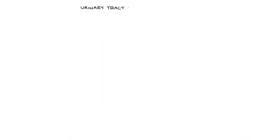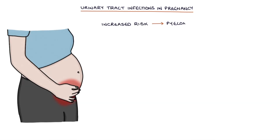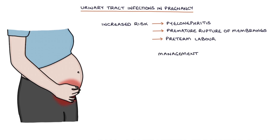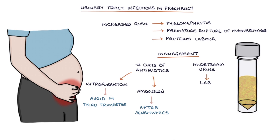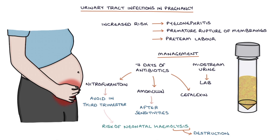In pregnant women, urinary tract infections increase the risk of pyelonephritis, premature rupture of membranes, and preterm labour. The management is slightly different in pregnancy. Urinary tract infections in pregnancy require 7 days of antibiotics. All women should have a midstream urine sent to the lab for microscopy, culture and sensitivity testing. The antibiotic options are Nitrofurantoin — however this needs to be avoided in the third trimester — Amoxicillin, but only after sensitivities are known, or Cefalexin. Nitrofurantoin needs to be avoided in the third trimester as there's a risk of neonatal hemolysis, or destruction of the neonatal red blood cells.